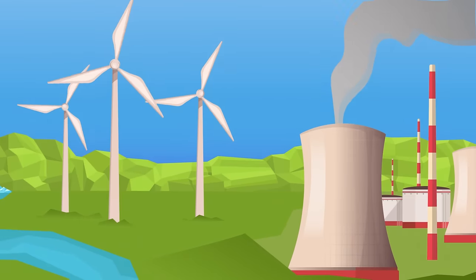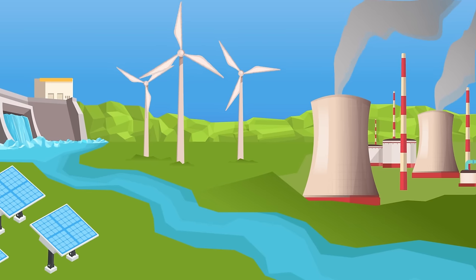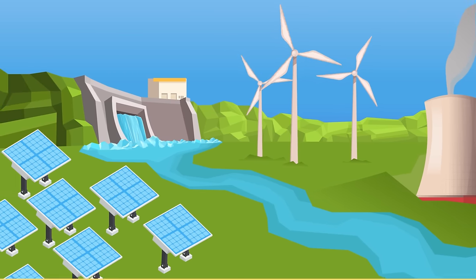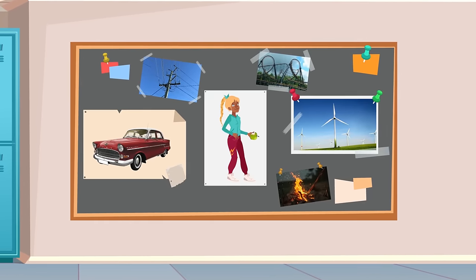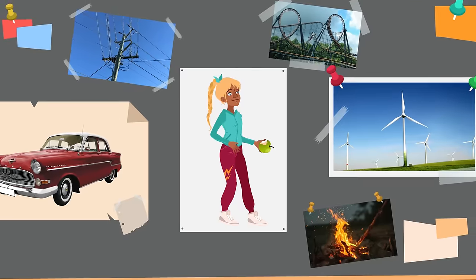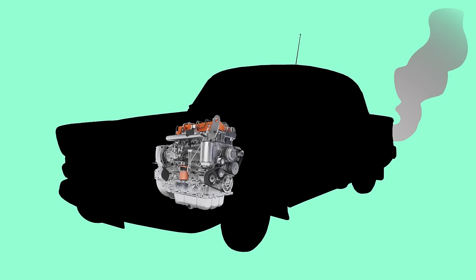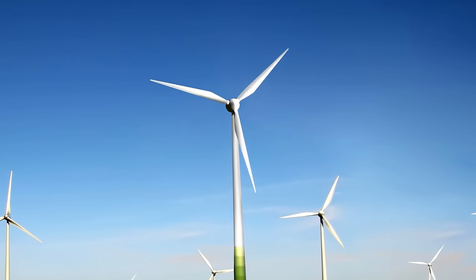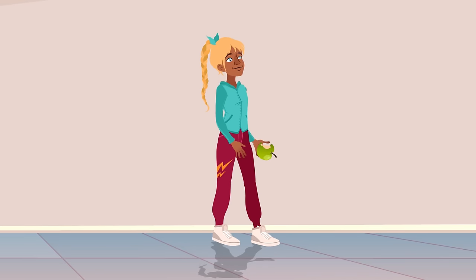Let's find out what energy is, what its properties are, and what types of energy exist. Energy is anything that has the capacity to produce a change in matter. If you look around, you'll see that energy is present everywhere. For example, cars move thanks to energy produced by motor combustion, and the blades of a mill start moving thanks to the energy produced by the wind.